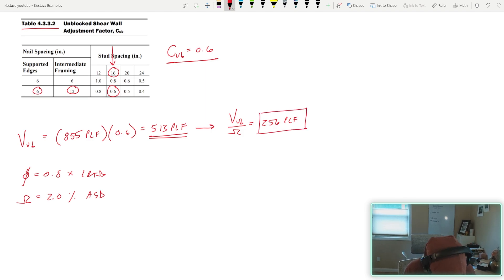V required, what I call required when that's the demand side when I do ASD, equals 2,000 pounds or 2 kips. The wall is 7 feet long, so I'm going to break it down into a PLF to compare it. That spits out 286 PLF as a demand. Well, V required is greater than V sub UB over omega, so we are no good today. We would need to make some types of modifications in order to bring up the strength of our shear wall to make this pencil out and be code compliant.